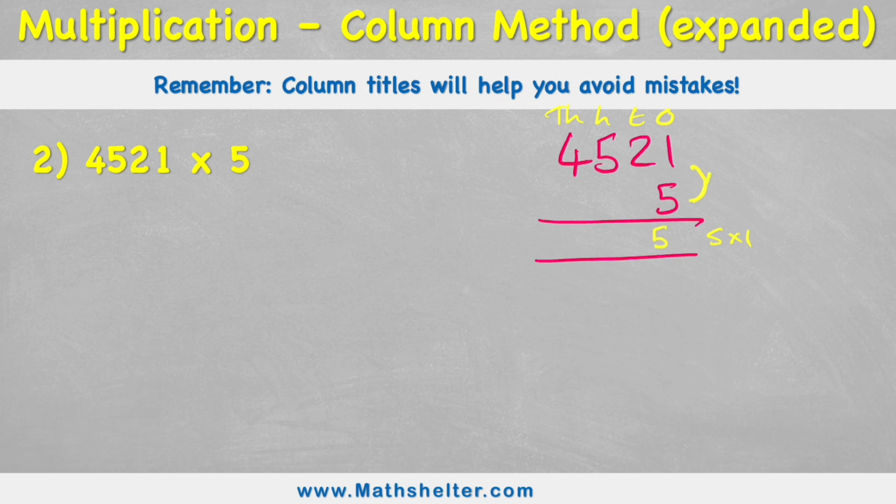My next question is five times 20. Because remember, that two is actually a 20. It's in the tens column. Now 20 has a zero, so I can get rid of it, put my zero inside my answer already. And now I can just do five times two, which is 10. So the answer to five times 20 is 100.